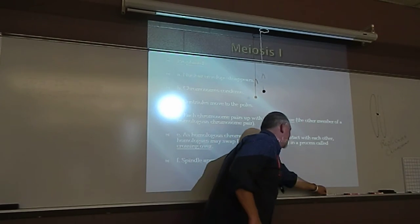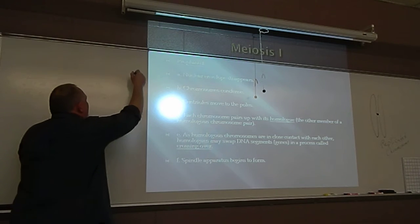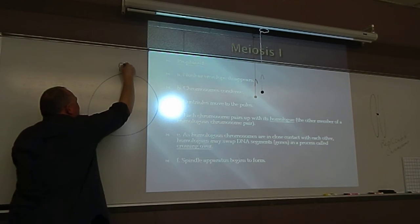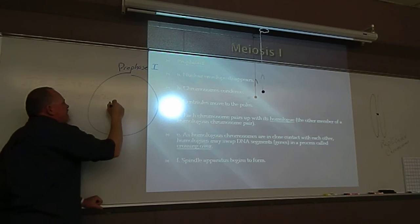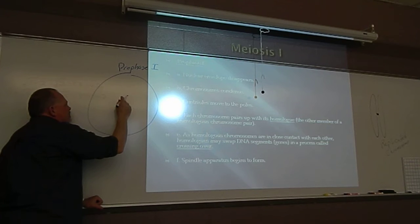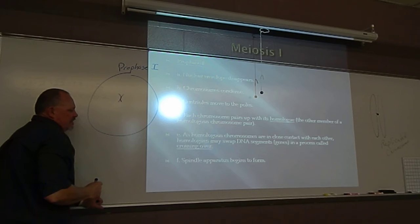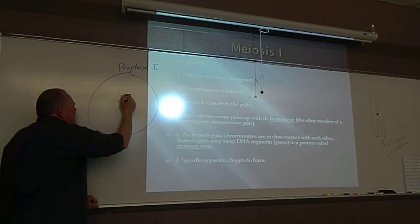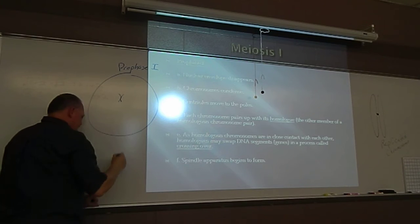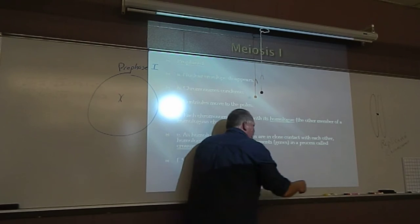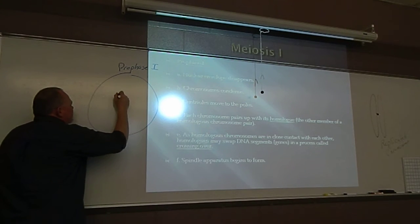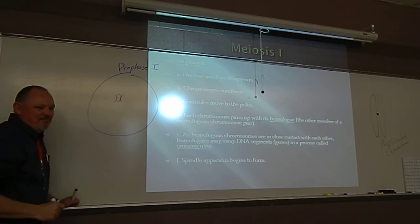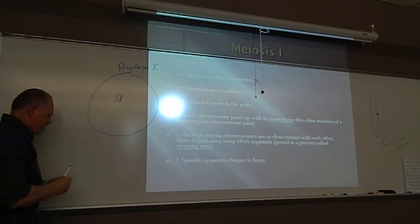But in prophase I of meiosis, instead of the chromosomes sort of just willy-nilly being located within the area, what will happen is that the homologue, the chromosome that has the same shape and length, they buddy up. They get close to each other.